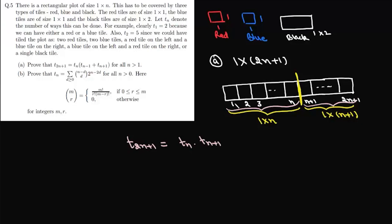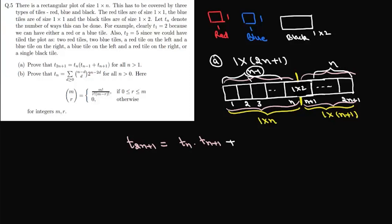In this first case we assumed the two portions are separate entities. A second case is possible where a black 1×2 tile occupies positions n and n+1, bridging the split. Then on the left-hand side we have n-1 tiling spaces and on the right-hand side we have n tiling spaces, which can be tiled in t(n-1) ways and t(n) ways respectively.